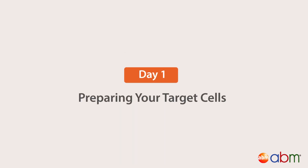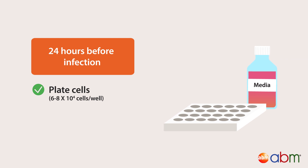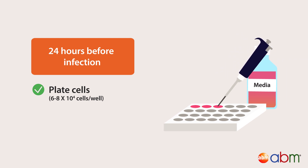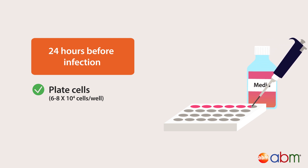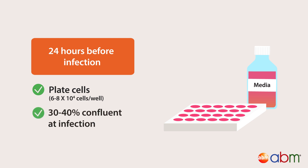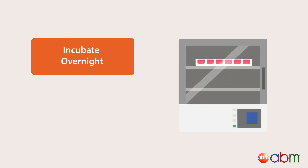Preparing your target cells: 24 hours before infection, plate your cells at a seeding density of 60 to 80 thousand cells per well in a 24-well plate using 1 ml of complete media. If you're using a different plate size, use a seeding density that ensures your cells are 30 to 40 percent confluent at the time of infection. Incubate the cells overnight at the appropriate temperature and CO2 conditions.